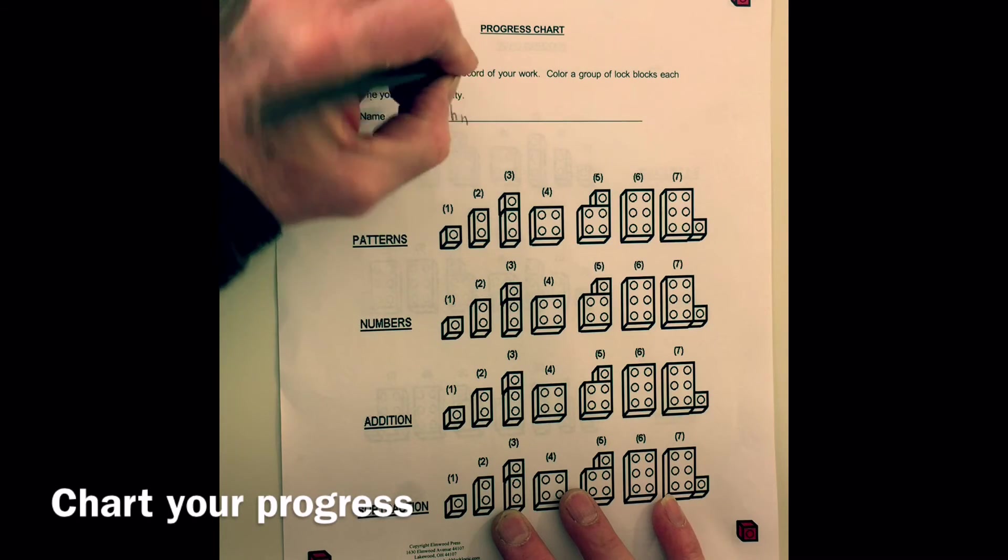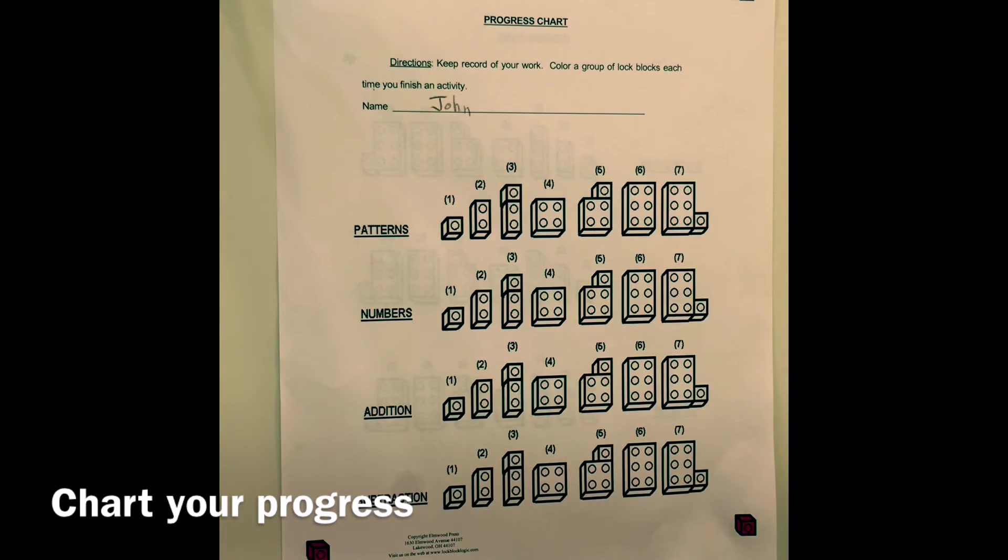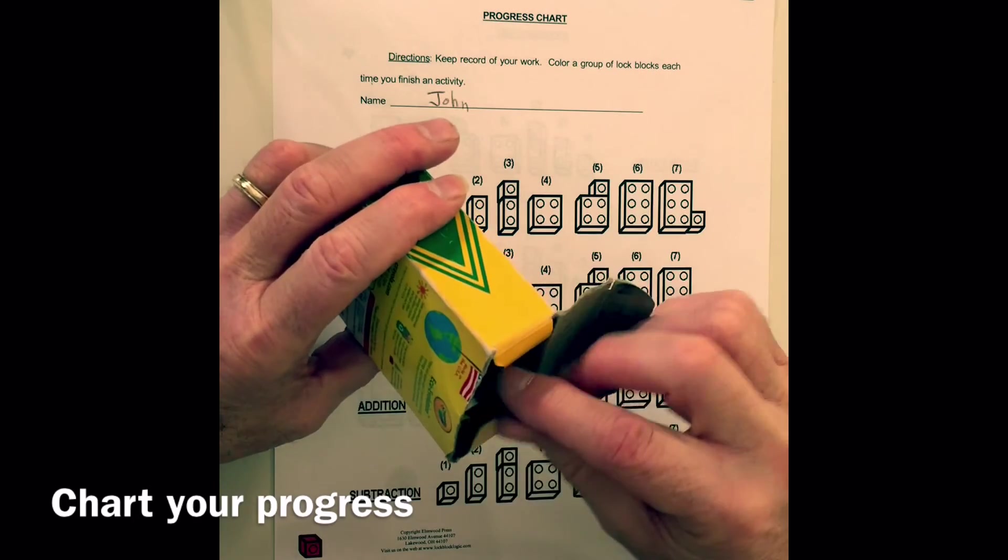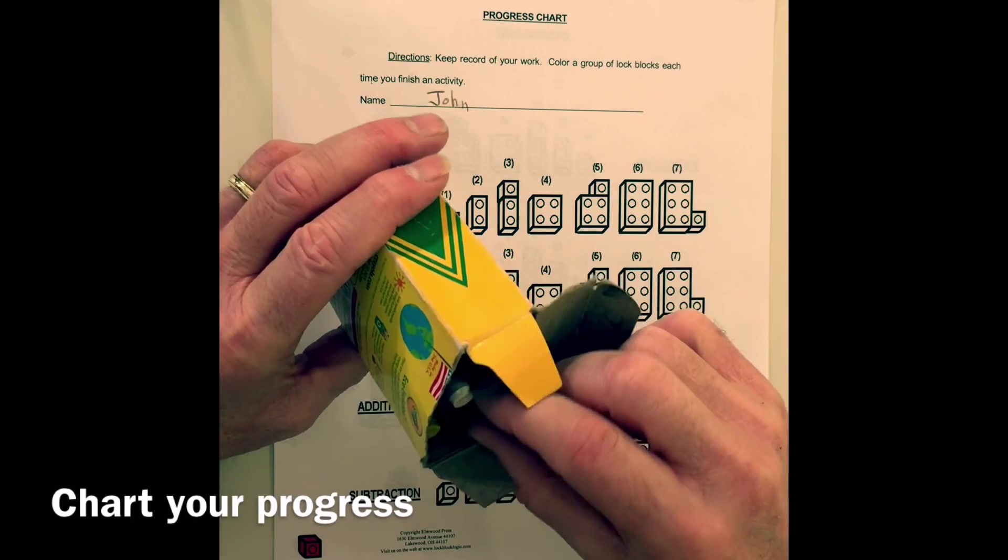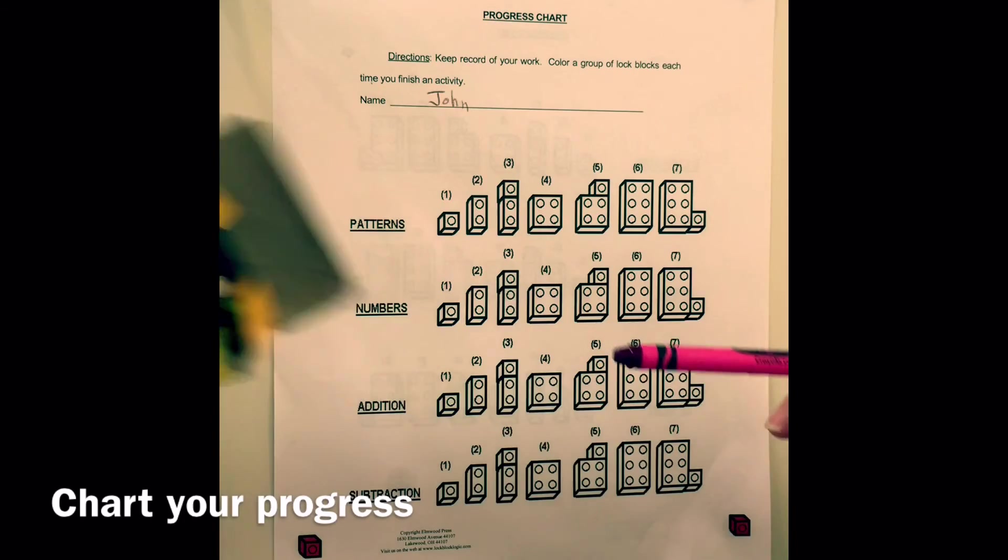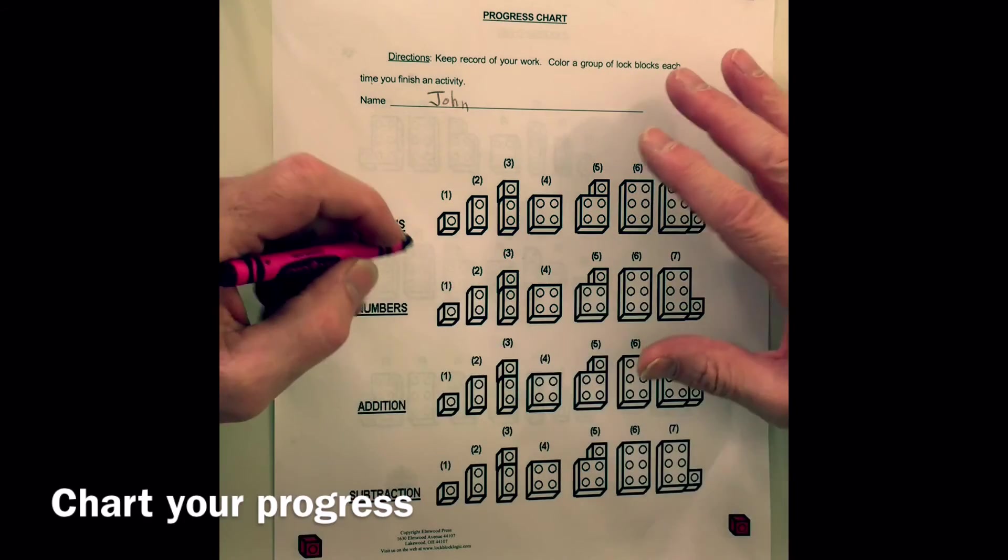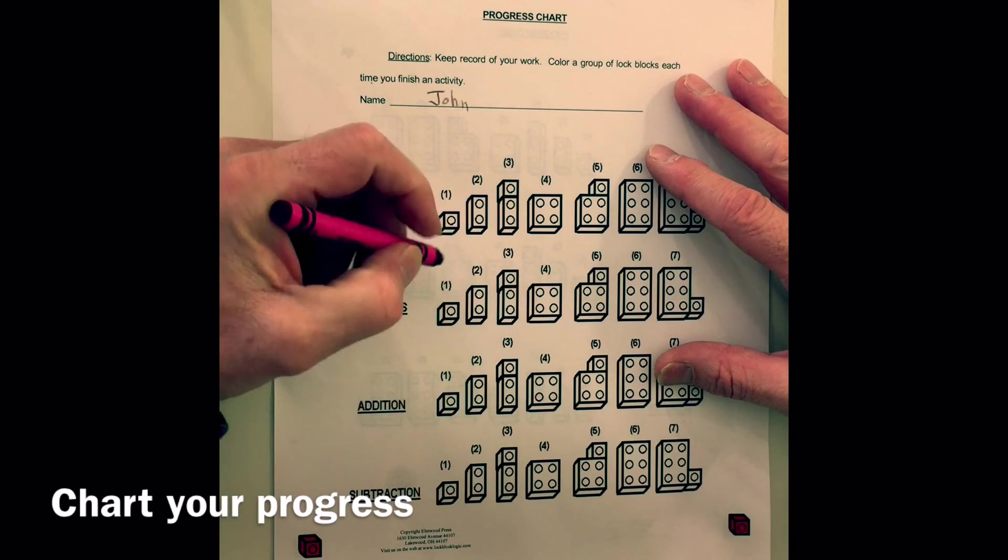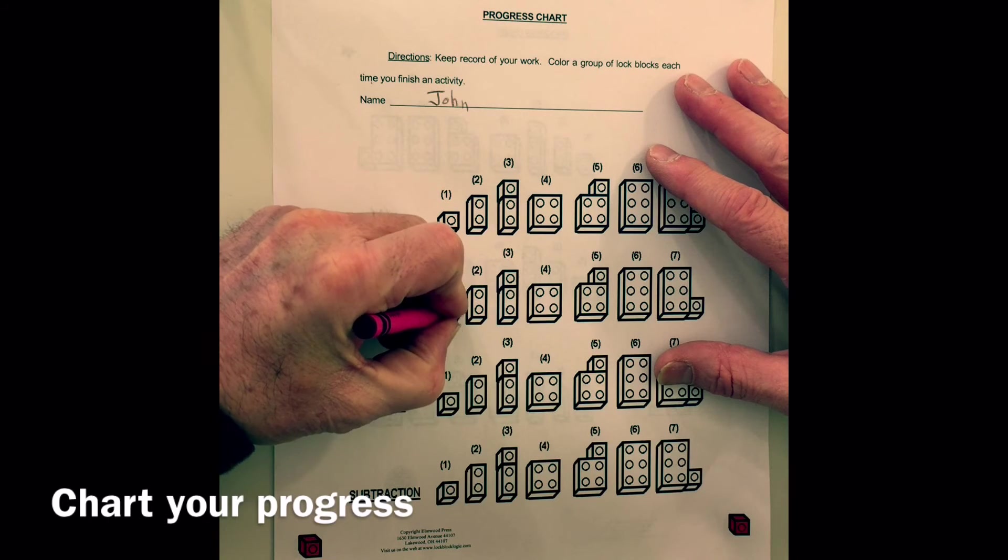We've done numbers activity number one, so let me put my name at the top of this: John. And then I will get out a crayon to color with. Let's see here, I think I'll pick out this color, red-violet.